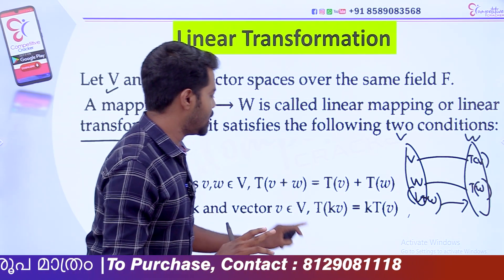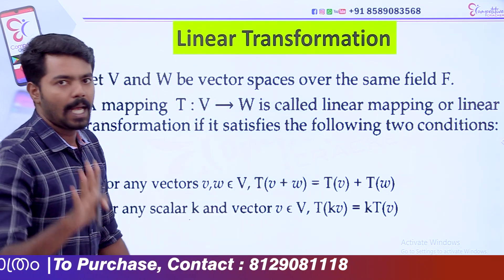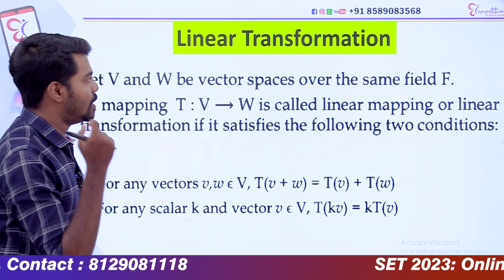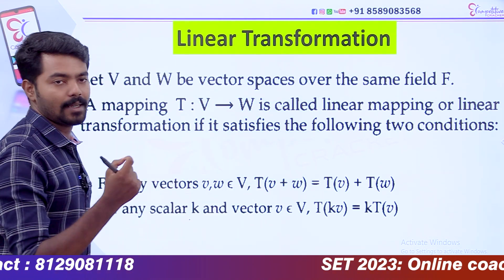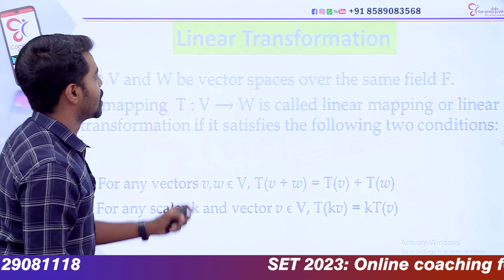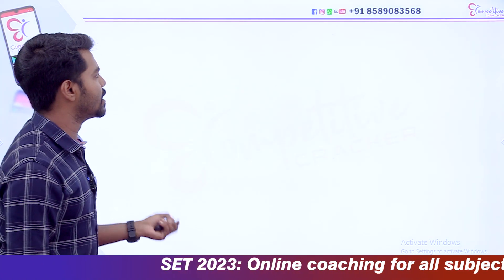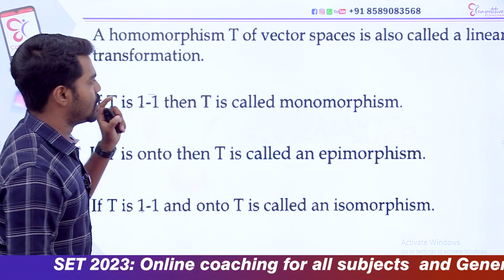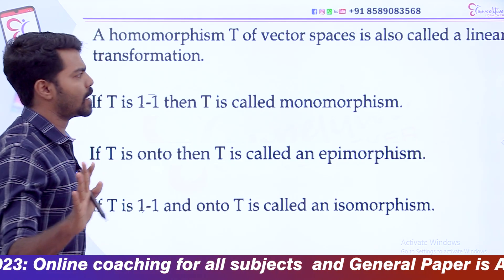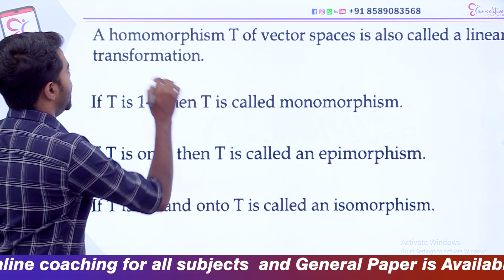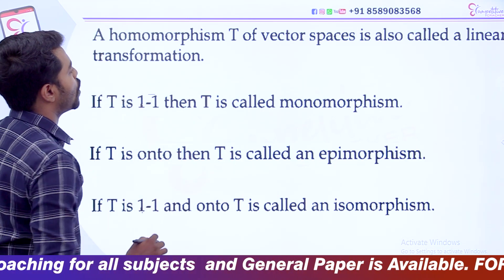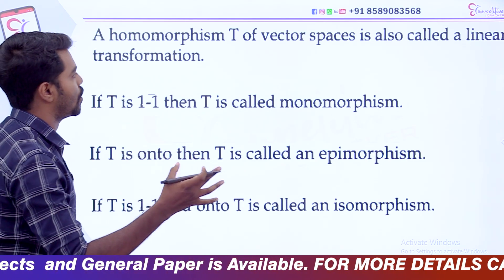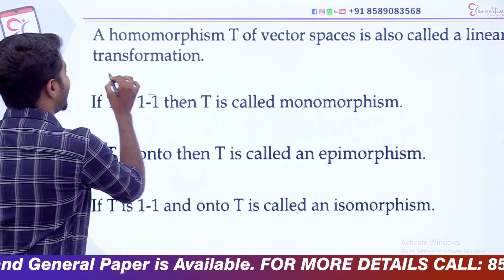It is clear. Linear transformation is a matter of two vector spaces. It is a relation of linear transformation. Now let's get started with a very important term — homomorphism. A homomorphism of vector spaces is also called a linear transformation.